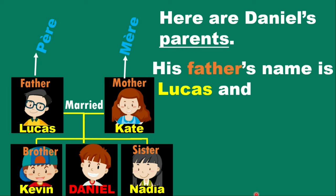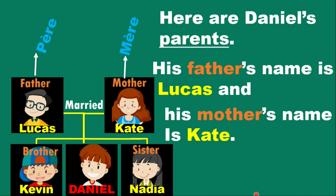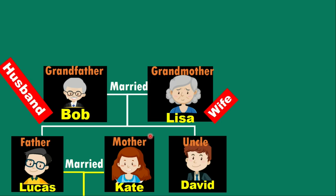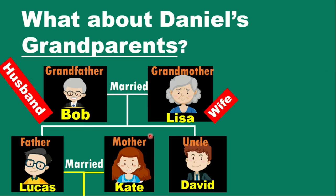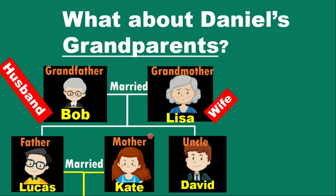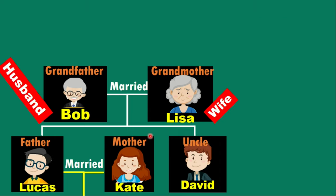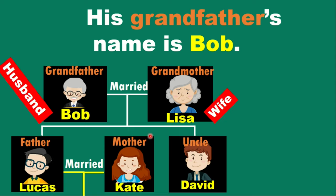Here are Daniel's parents. His father's name is Lucas and his mother's name is Kate. On the left we have Lucas and on the right we have Kate. Lucas married Kate. And what about Daniel's grandparents?